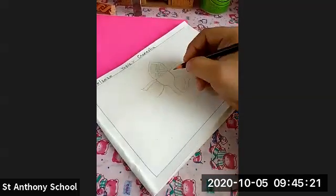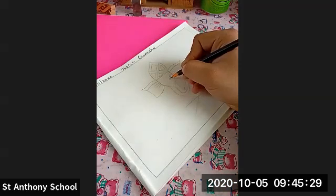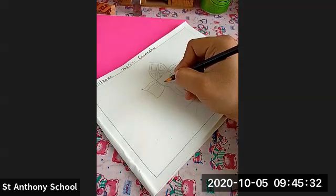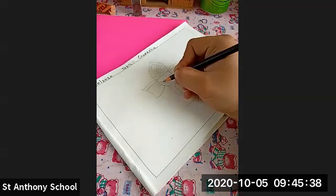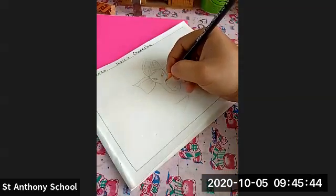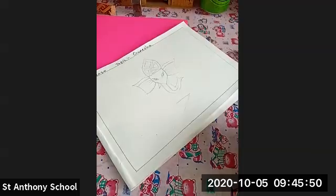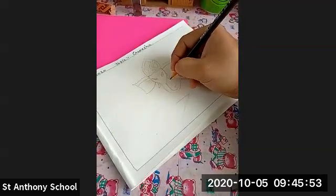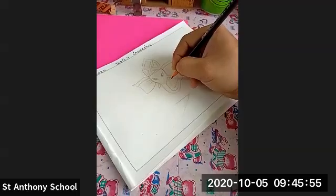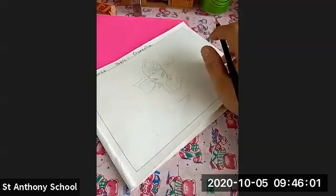Now what we are going to do — I'm going to draw the eyes of the Ganpati over here. Same way on the opposite side, I have drawn the eyes of the Ganpati. And now I'm going to draw the tusk of the Ganpati. As you know, Ganpati has two tusks — one is full and one is broken.